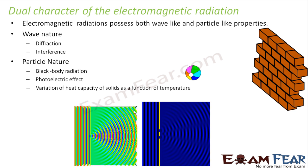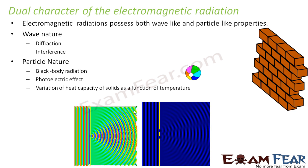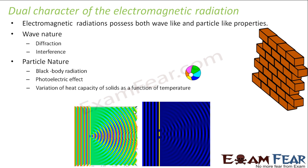Variation of heat capacity of solids as a function of temperature is something which we have not yet discussed. Maybe you will study it in your higher classes. So these are some of the phenomenon which support the particle nature of radiation and diffraction and interference support the wave nature of electromagnetic radiation.